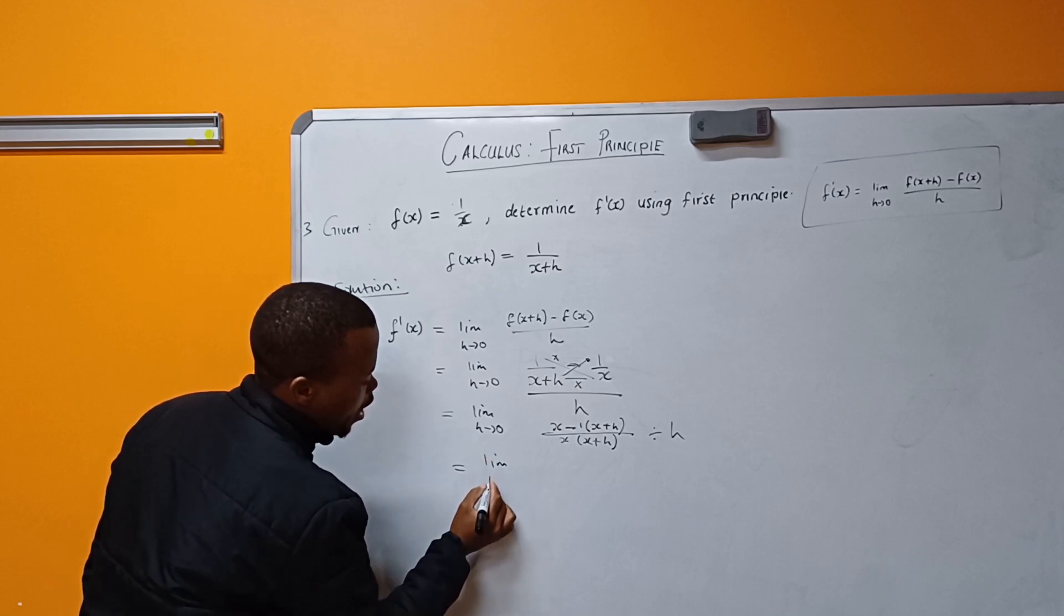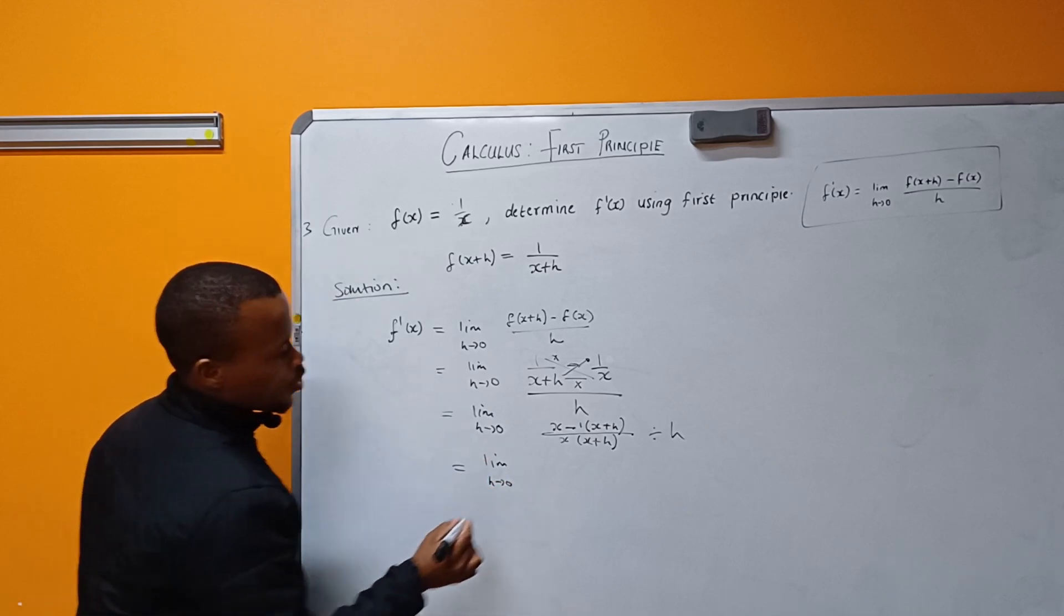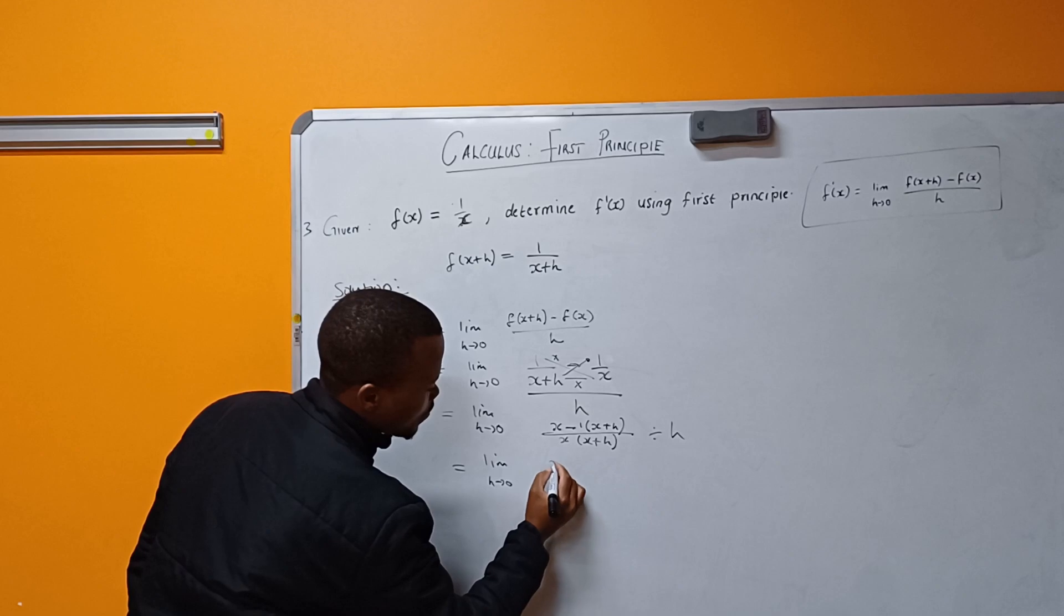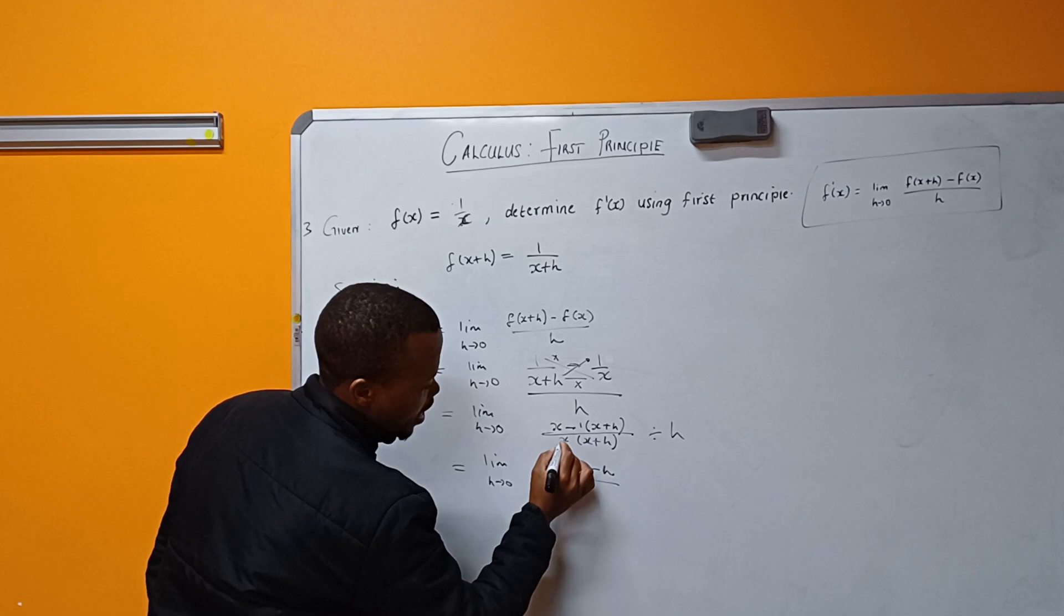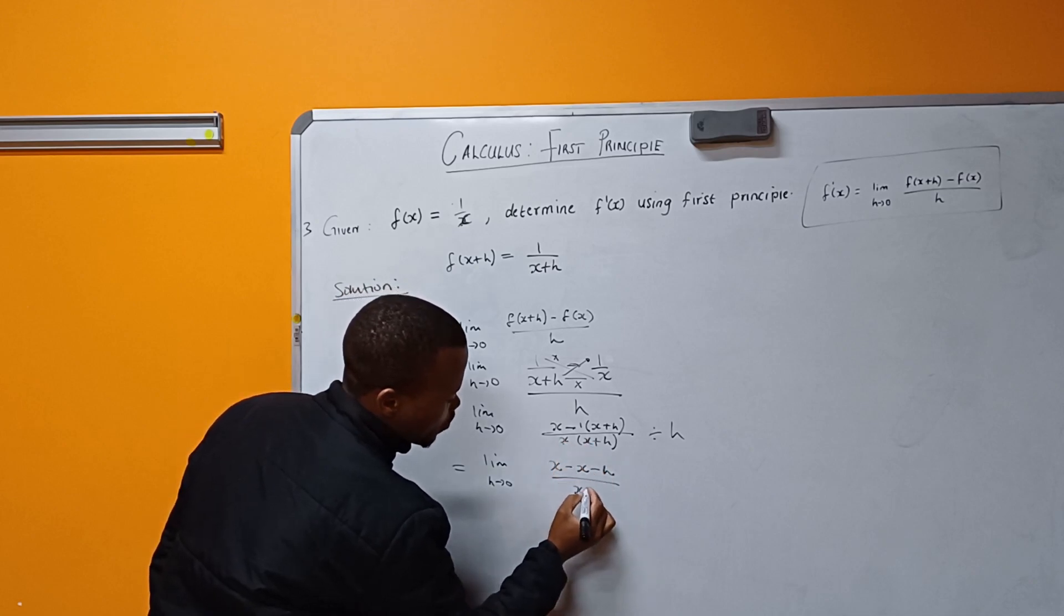So here I have limit as h tends to zero. If you look here it becomes [x - (x+h)]/[x(x+h)], which is x - x - h over x² + xh.